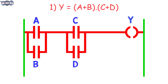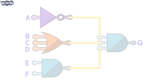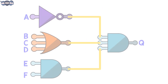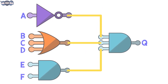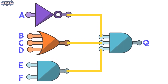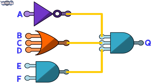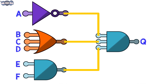We hope that you have understood this example and its explanation. Let us move to the second example: implement the ladder logic for the logic diagram shown here. Try to work out this example on your own before proceeding to the solution. You can pause the video here and work out the solution.